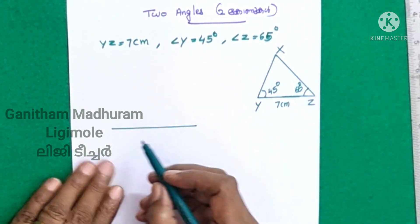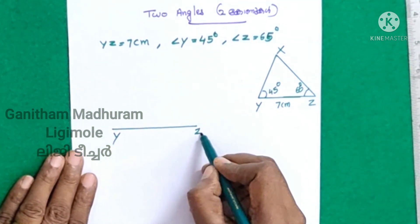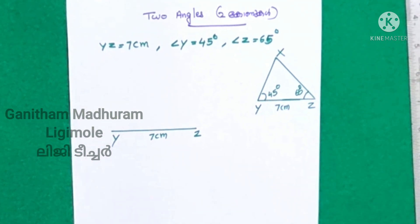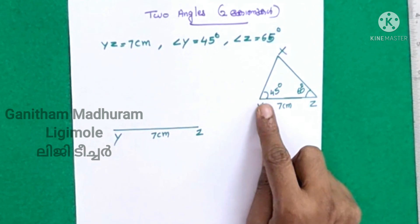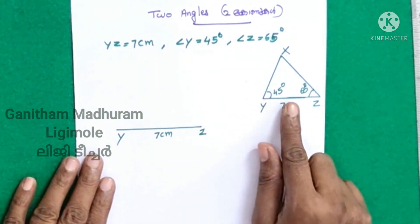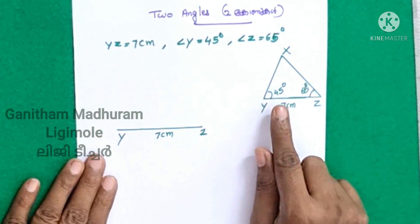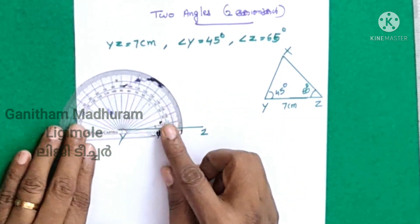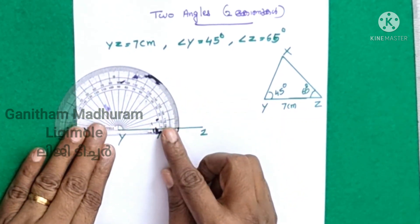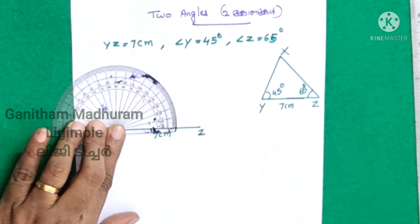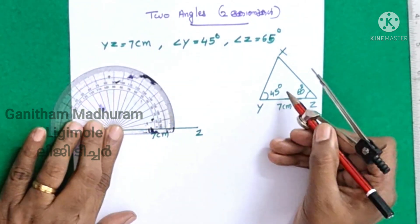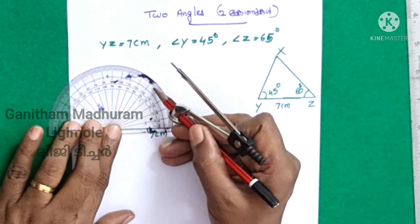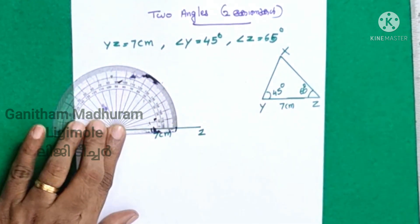Here, Y to Z is 7 cm. Angle Y is 45 degrees. How do we do it? We need 35 degrees. Mark it 35 degrees with the pencil.